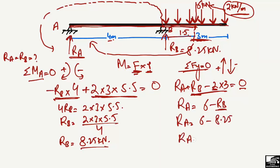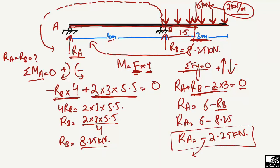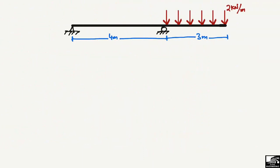R_A comes out to be −2.25 kN. The negative sign shows that our assumed direction was wrong, so we have to change the direction of R_A. The reaction R_A is equal to 2.25 kN but it is acting in the downward direction, not upward. When we get a negative sign in a reaction it means we must change the assumed direction. So R_A = 2.25 kN downward and R_B = 8.25 kN upward.